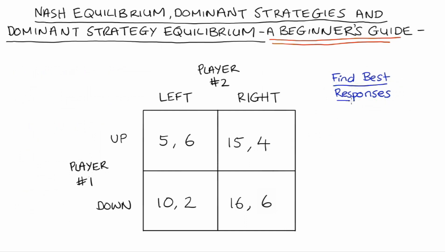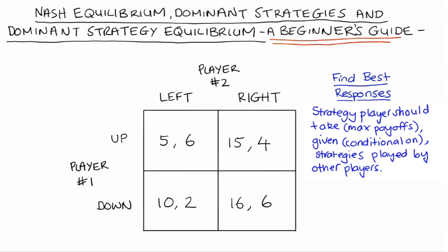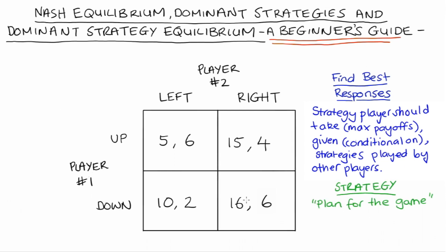The first thing I'm going to do is find what we call our best responses. Roughly, best responses are the strategies that our players should take if they want to maximize their payoffs, given the strategies of the other players. A strategy in game theory is like a plan of action for a player. Because this game is very simple, our players' possible strategies are just equal to their possible actions — up or down for player one, or left or right for player two.